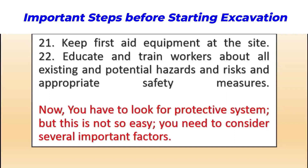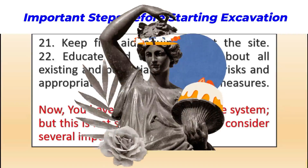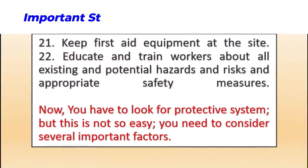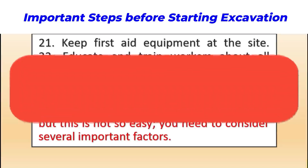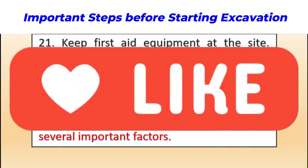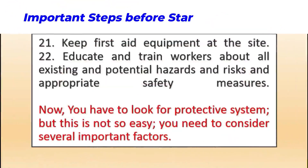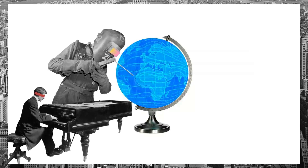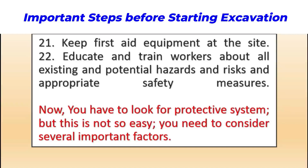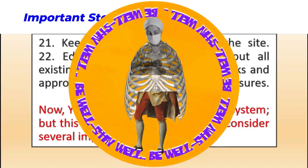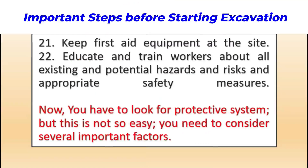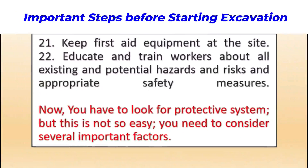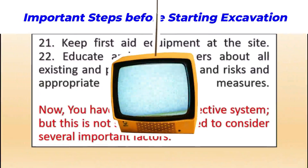Workers are entering deep trenches with no one there to supervise, ensure safety requirements are completed, or confirm that permits are obtained and approved. These are the causes that ultimately lead to trench collapse, workers buried underneath, and fatal accidents. I advise all safety practitioners: wherever there is an excavation activity, train your workers — especially site supervisors and foremen — on the potential hazards and the best possible safety control measures to prevent workplace accidents.